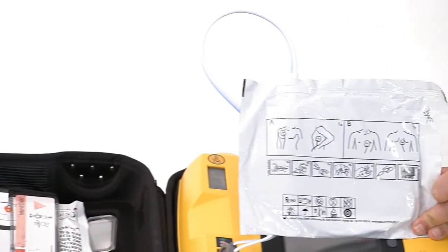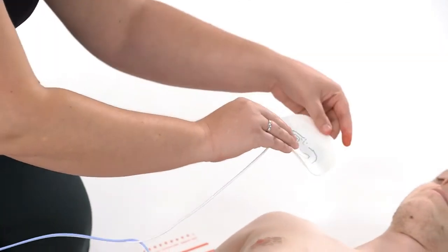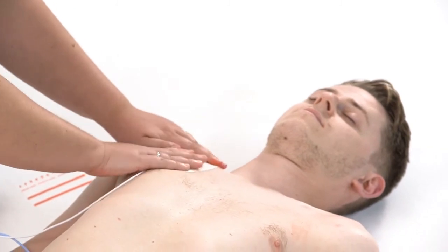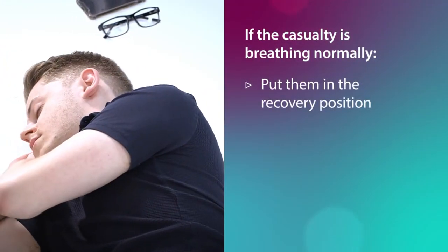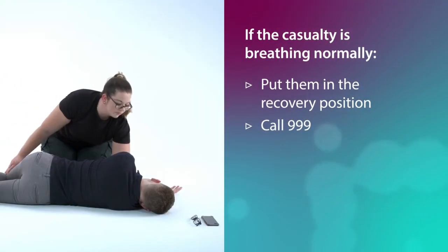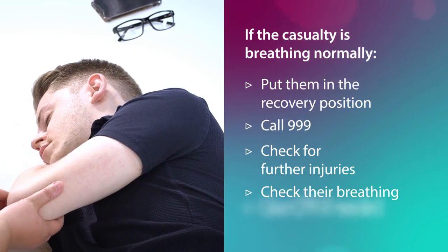If the casualty is an infant or a child, then the immediate concern is that they get oxygen quickly. So if they aren't breathing, perform CPR for about a minute before you call 999. We'll cover how to perform CPR a little later in the course. If an AED arrives, switch it on and follow the visual or audio instructions it gives you. You should still be prepared to give CPR, as the AED is designed to be used alongside rather than instead. If the casualty is breathing normally, put them into the recovery position and call the emergency services. Assess them for further injuries and regularly check on their breathing. If it deteriorates, you'll need to give CPR.